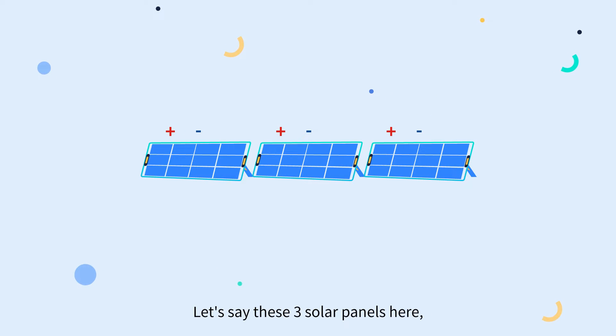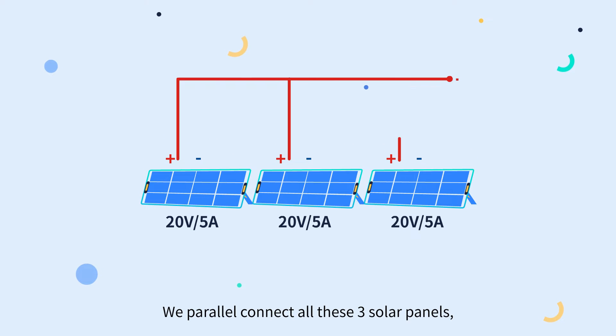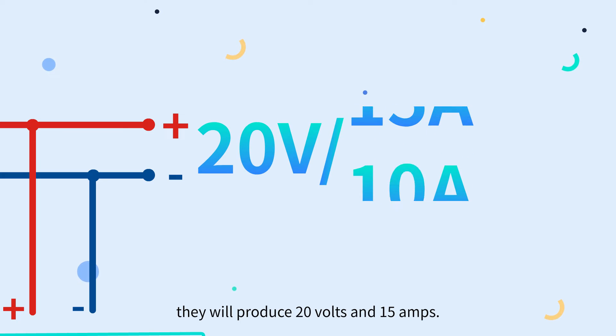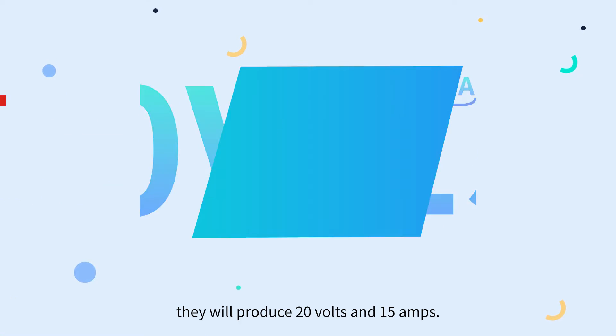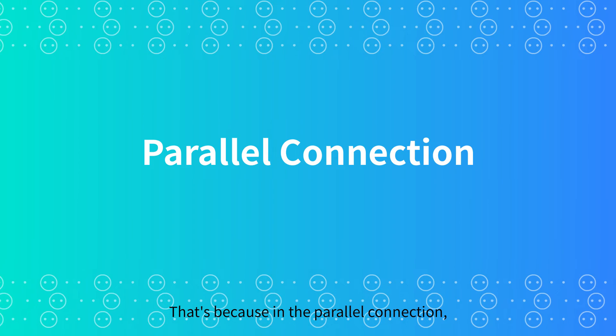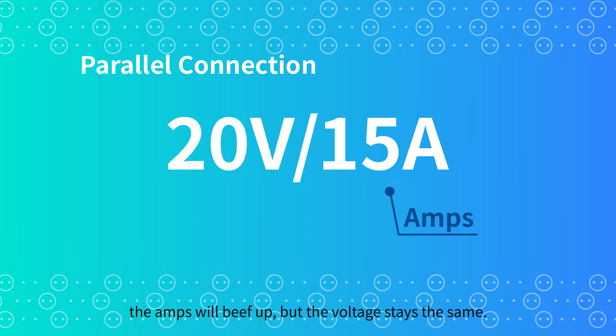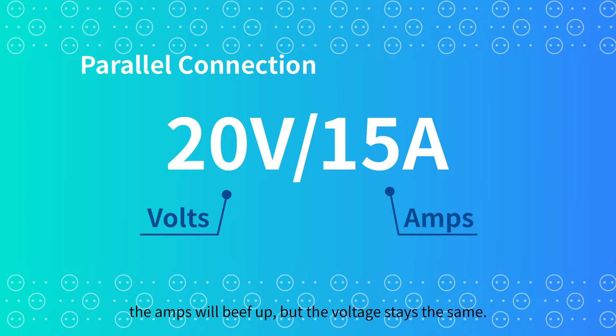Let's say these three solar panels here, each panel produces 20 volts and 5 amps. We parallel connect all these three solar panels, they will produce 20 volts and 15 amps. That's because in the parallel connection, the amps will beef up, but the voltage stays the same.